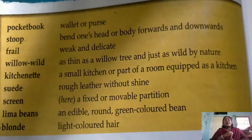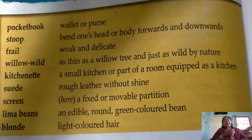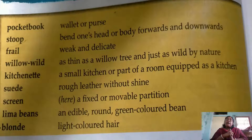Number seven: screen — a fixed or movable partition which we generally hang within our homes to give a partition to our rooms. Number eight: lima beans — an edible, round, green colored bean which we have in our salads. Number nine: blonde — light colored hair. So this much you all have written down.